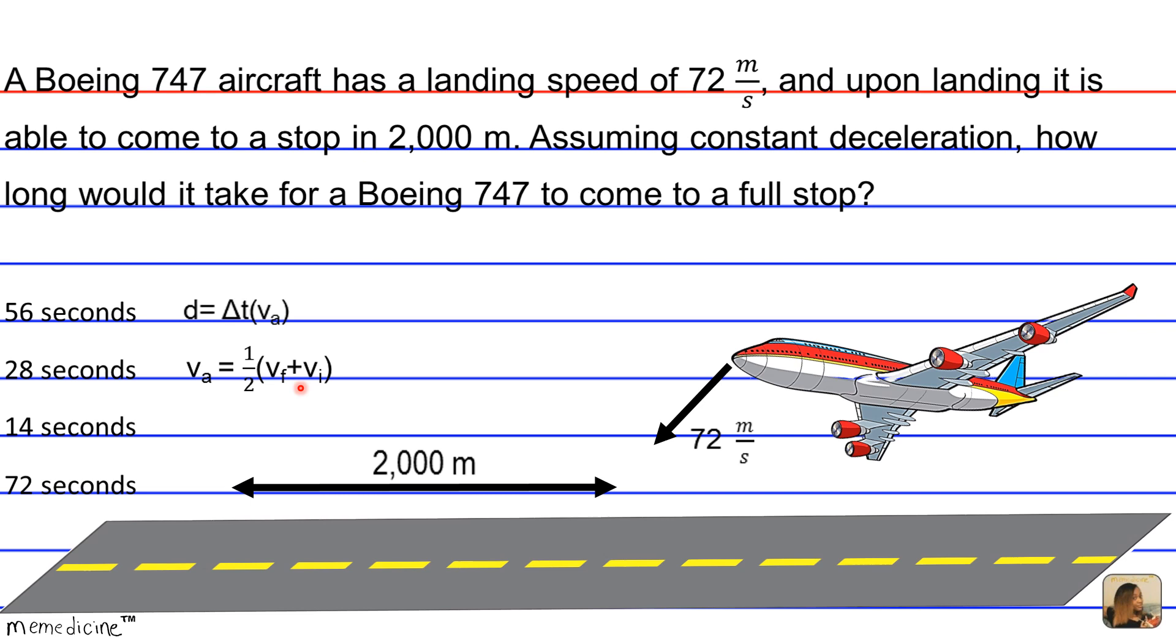So we know displacement must equal 2,000 meters, therefore we can plug in all our values to solve for T, the unknown. So we have that 2,000 meters is equivalent to delta T times 1 half, where here we're inputting our formula for average velocity,